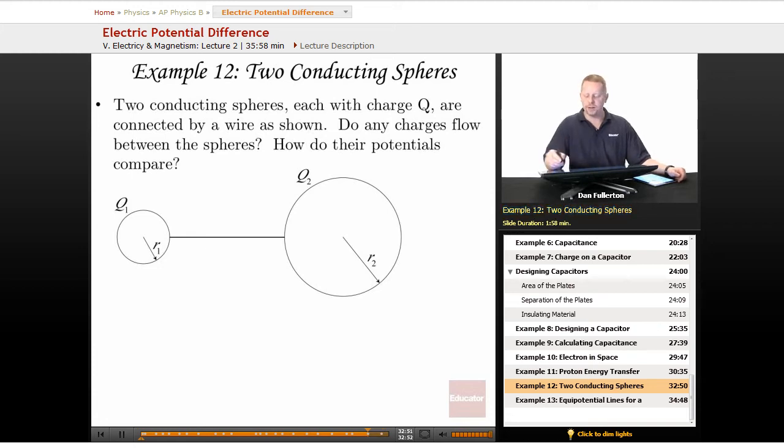All right, let's take a look at a problem with two conducting spheres. These two conducting spheres, each with charge Q, are connected by a wire as shown. Do any charges flow between the spheres, and how do their potentials compare?